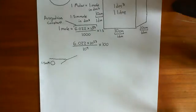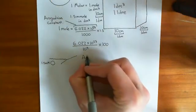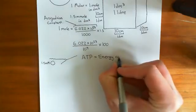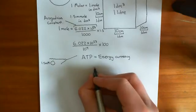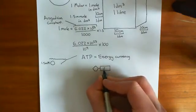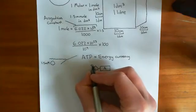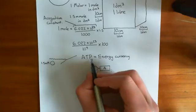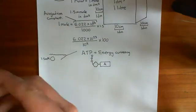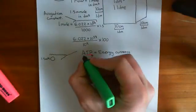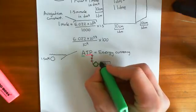Cells very early in the evolutionary process started using ATP as their energy currency. ATP consists of a ribose sugar — drawn as a pentagon — with adenine, the organic base, off the side, and then three free phosphate groups off the fifth carbon, which is why it's called adenosine triphosphate. Adenosine refers to the ribose bonded to the adenine, and the triphosphate refers to those free phosphate groups.